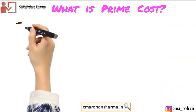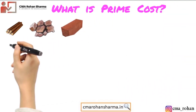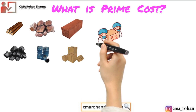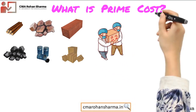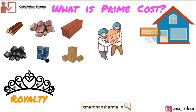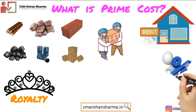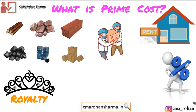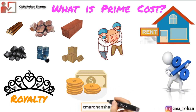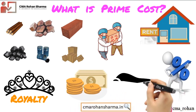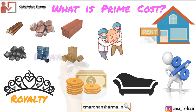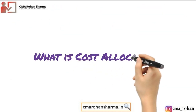What is prime cost? Prime cost is the aggregate of direct material, direct labor, and direct expenses. Generally it constitutes 50% to 80% of the total cost of the product, and as it is primary to the cost of the product, it is called prime cost.